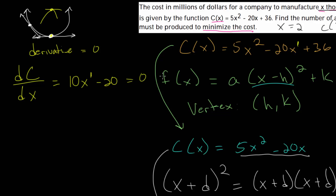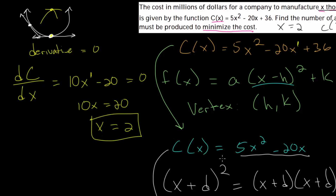Now we set the derivative equal to zero and solve: add 20 to the other side, divide by 10, and we get the exact same value of x equals 2. This confirms our earlier answer. The calculus method is faster since you can avoid completing the square, which can be a little tedious. If you get a lot of practice with completing the square it's not too bad, but the derivative method is certainly the simpler, faster method.